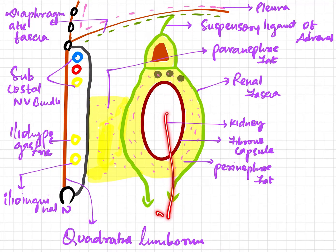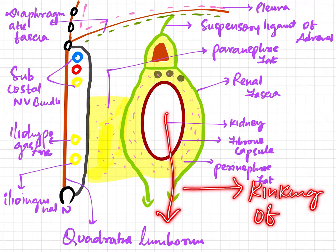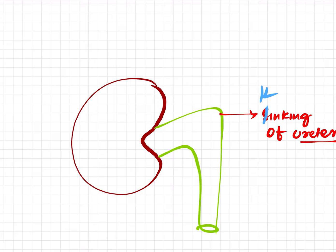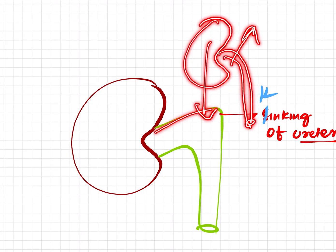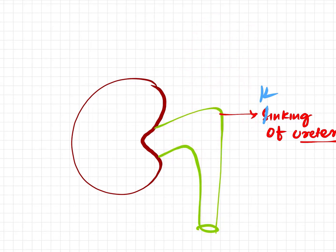Depletion of the perinephric fat causes the downward displacement of the kidney, which in turn causes the kinking of the ureter. Initially the ureter runs normally, but when the kidney comes down the ureter bends upward — this bending is called the kinking of the ureter. This is about the perirenal fat.